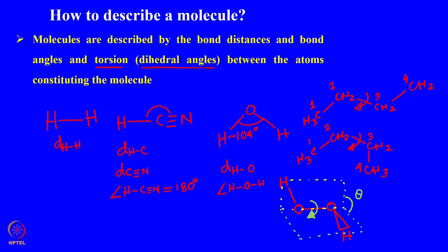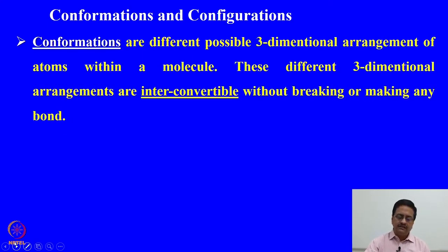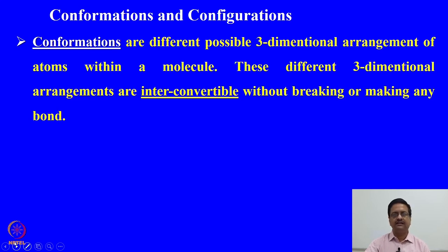When a molecule has more bonds, there are more different bond angles and more different torsion angles. To describe a molecule, one must know all possible bond lengths, bond angles and torsion angles. When we try to draw a molecule in a two-dimensional plane, we need to know how those atoms are oriented in three dimensions. We need to understand the difference between conformations and configurations.